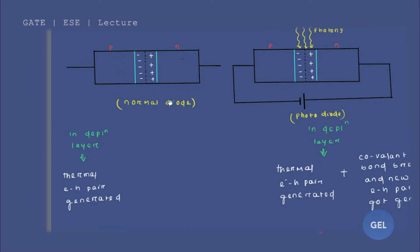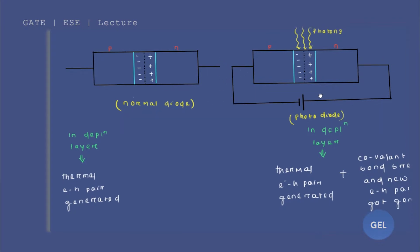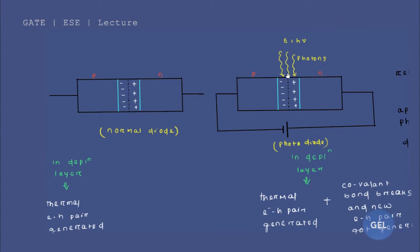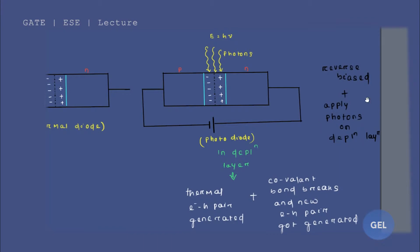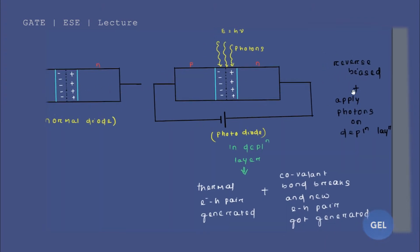We have taken a normal diode, and in the normal case, there is generation of thermally generated electron-hole pairs in the depletion layer. Now what we are going to do is apply reverse bias to this normal diode and then apply photons onto the depletion layer. By doing reverse bias to the normal diode and applying photons on the depletion layer, what we get is a photodiode.